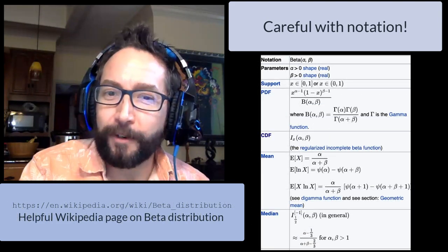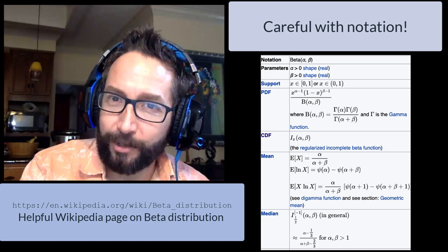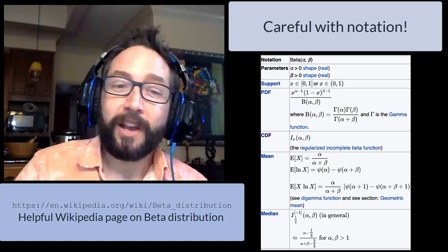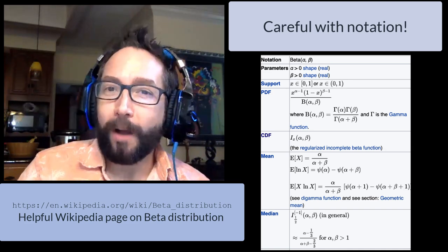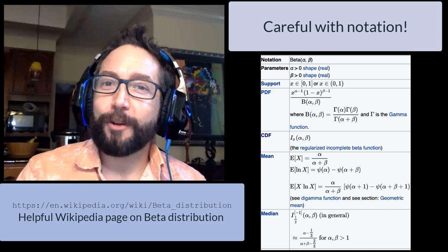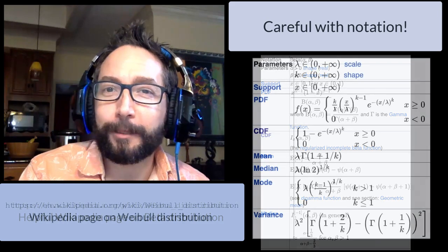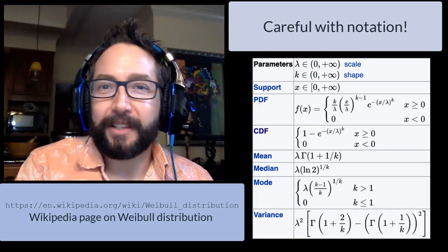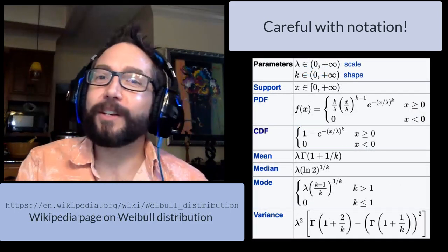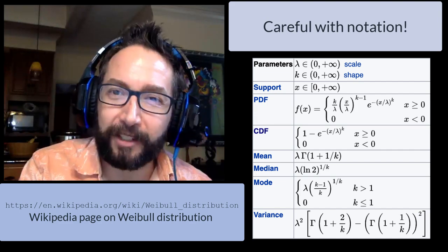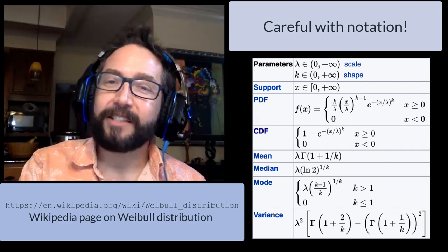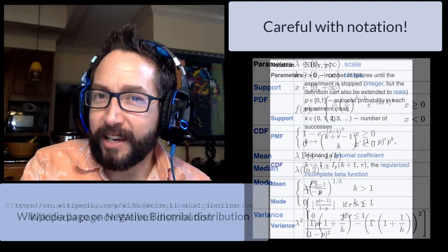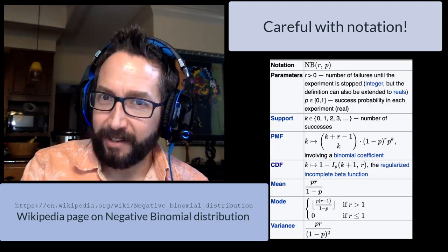If you head over to the log normal distribution, the Poisson distribution, or the normal distribution, you'll find a wealth of information about where these distributions are applicable — formulas for their PDFs, the expected value, the variance, the standard deviation, etc. But the notation isn't always consistent.